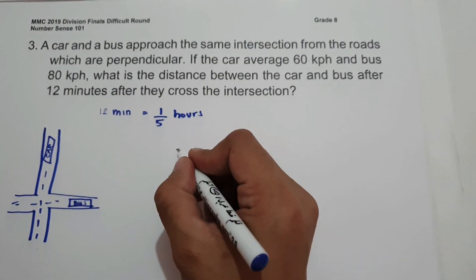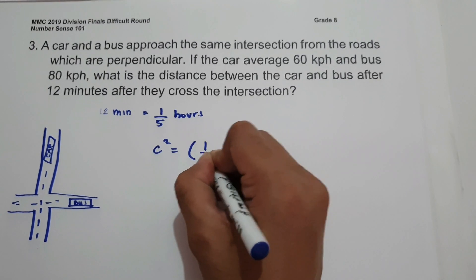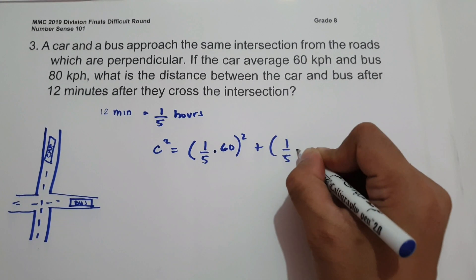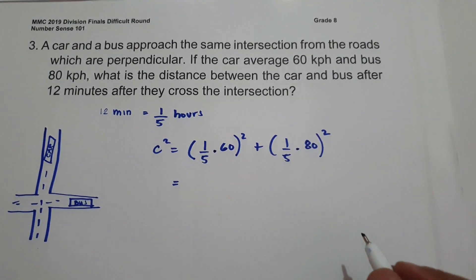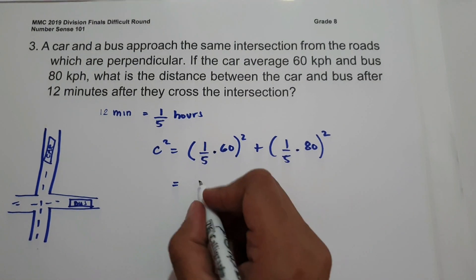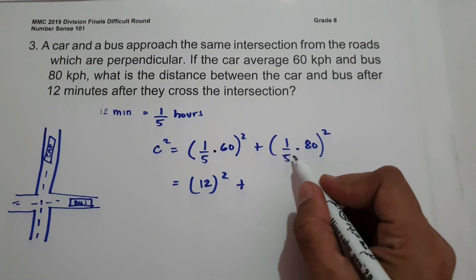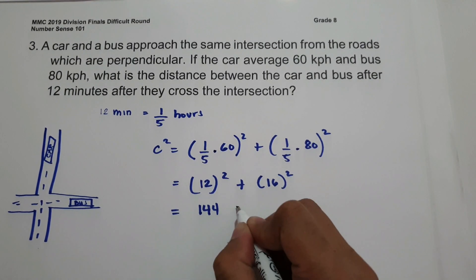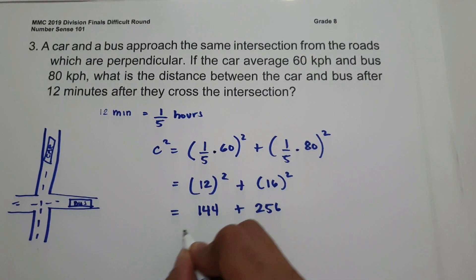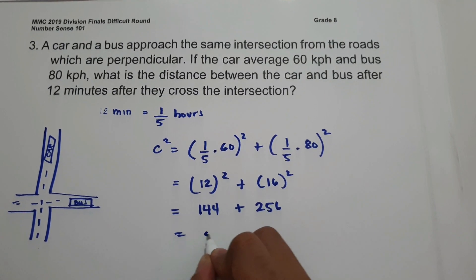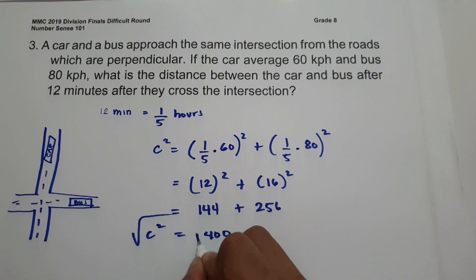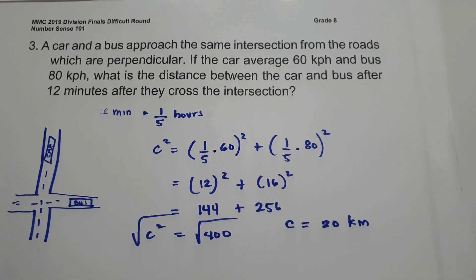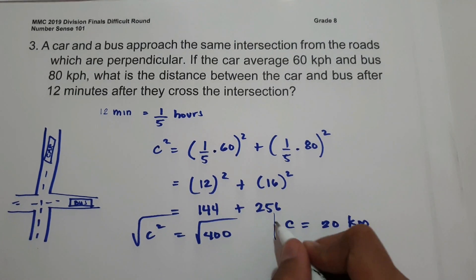Using the Pythagorean theorem, C squared equals (1/5 times 60) squared plus (1/5 times 80) squared, which is 12 squared plus 16 squared. Simplifying, we have 144 plus 256, which equals 400. Taking the square root gives us 20 km. Therefore, the distance between the car and the bus after 12 minutes is 20 km.